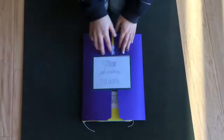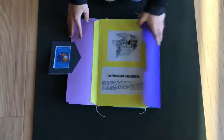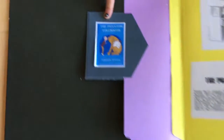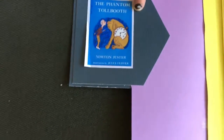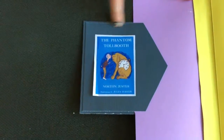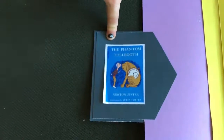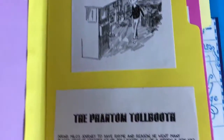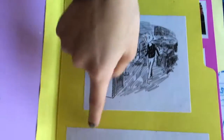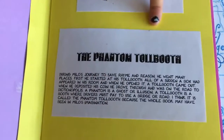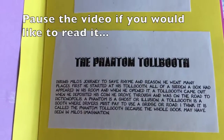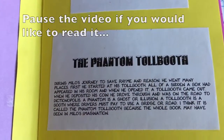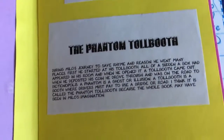First, when you open it, the first thing you see is a little picture of the cover of The Phantom Tollbooth book. Then you look a little to the side and you see a picture of Milo, the main character, and the Tollbooth. Then there's a little description that Carter wrote of the book.